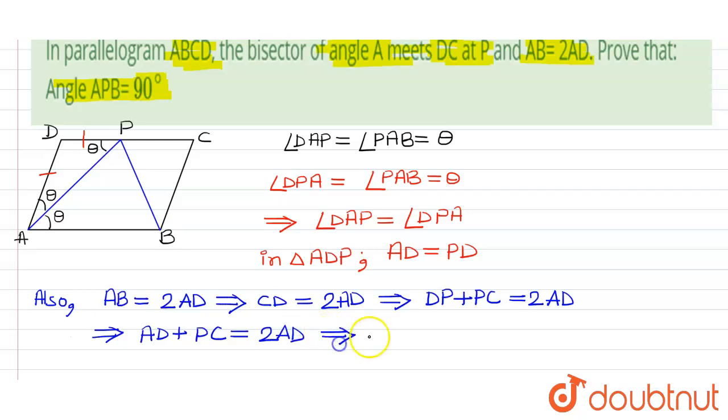So that implies PC is equals to AD. So this side PC is also equals to AD.